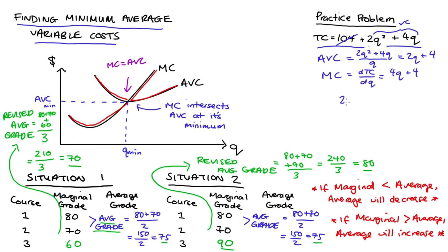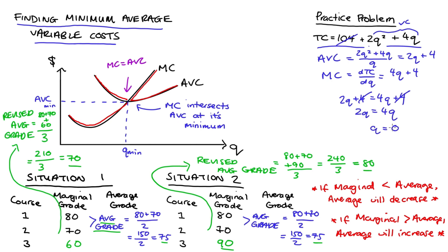So what happens if we set these two things equal to one another? We get 2q plus 4 equals 4q plus 4. Taking away 4 from both sides, we get 2q equals 4q. The only quantity where that's true is quantity equals zero.